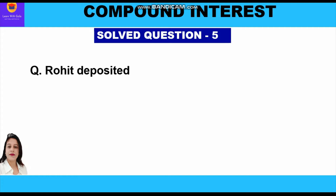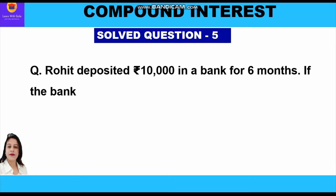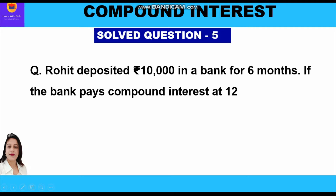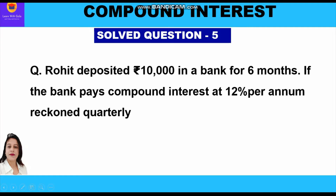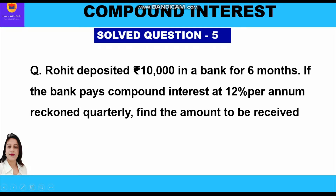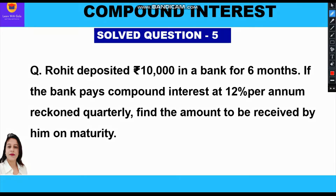Now let's start with the question. Rohit deposited rupees 10,000 in a bank for six months. If the bank pays compound interest at 12% per annum reckoned quarterly, find the amount to be received by him on maturity.